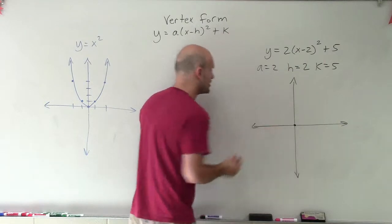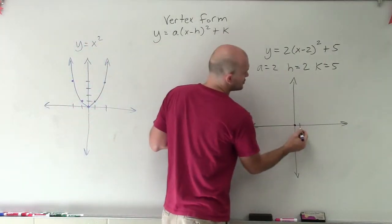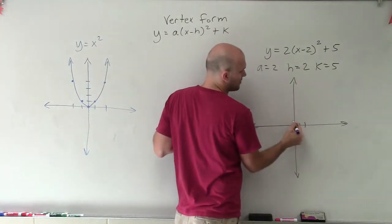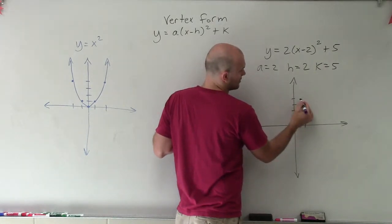And if I know my original parent graph starts at 0, 0, now I'm going to shift it over two units to the right and then five units up. 1, 2, 3, 4, 5.